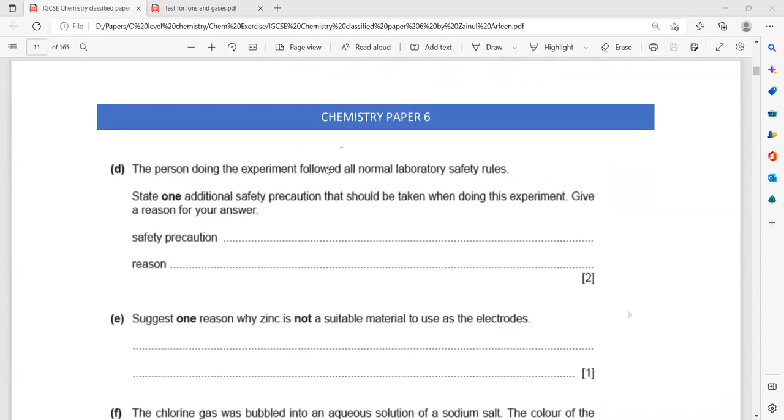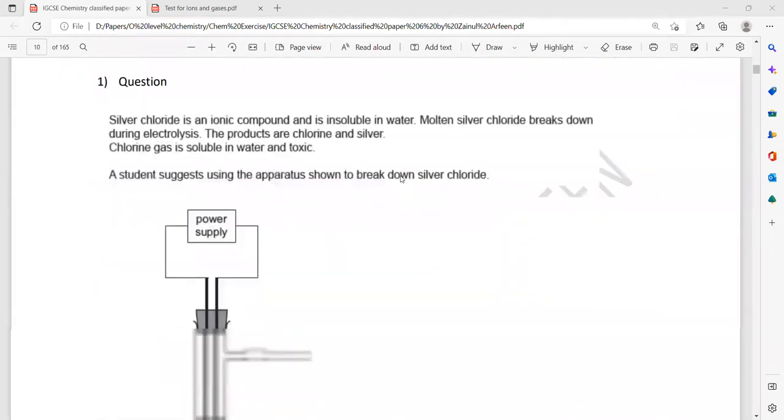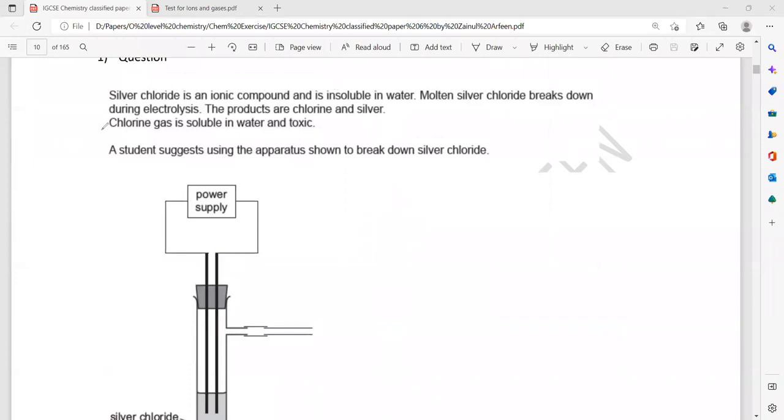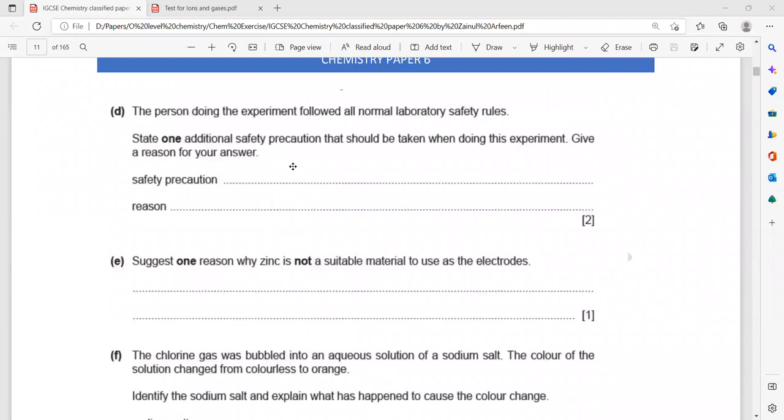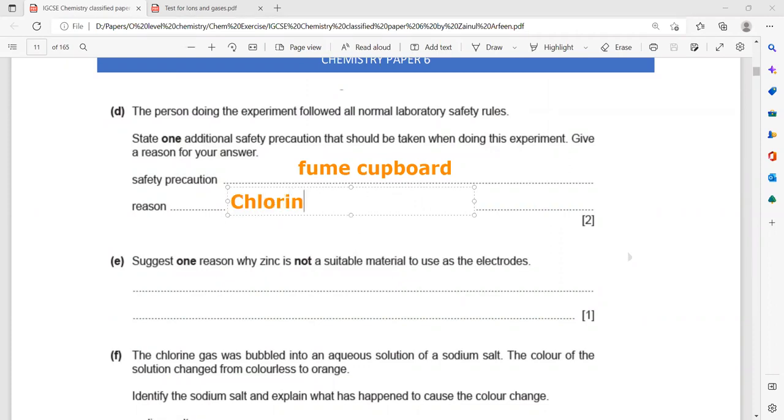In part D, the person doing this experiment followed all the normal lab safety rules. State one additional safety precaution that students should take. Look, whenever a toxic gas is given off, use a fume cupboard because the chlorine gas is toxic. It's given in the question a toxic gas is given off, so whenever a toxic gas is given off we'll use a fume cupboard. The safety precaution is you will use a fume cupboard, and the reason is the gas is toxic.